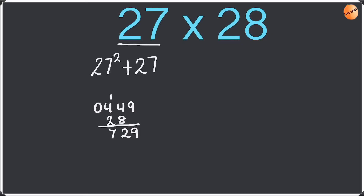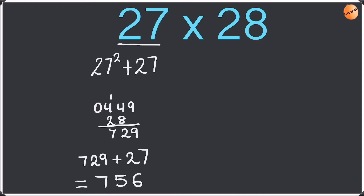If you guys are wondering how I worked that out, I've got a video on how to square any number, so go check that video out. Okay so we've got 729, and now we have to add the plus 27. So 729 plus 27 is going to be 756. So we know that 27 times 28 is 756, and we've worked the answer out using the first method.